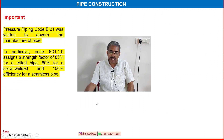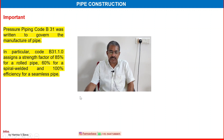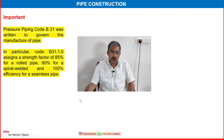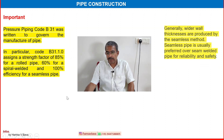Pressure piping code B31 was written to govern the manufacturing process. In particular, code B31.1.0 assigns a strength factor of 85% for roller-rolled pipe and 60% for spiral welded and 100% efficiency for seamless pipe.